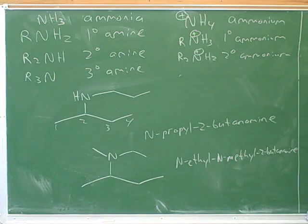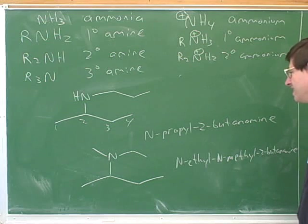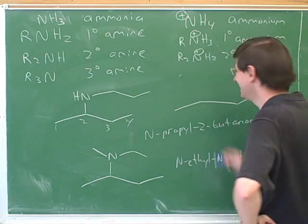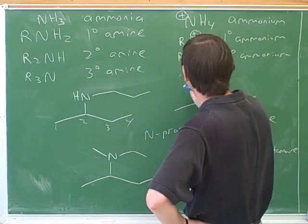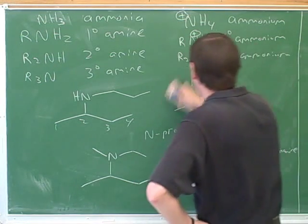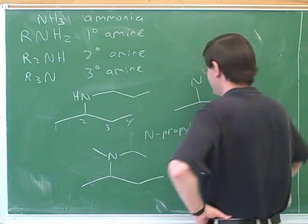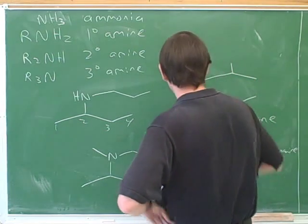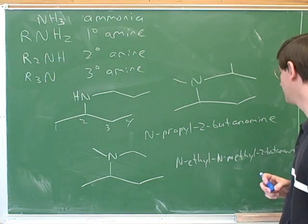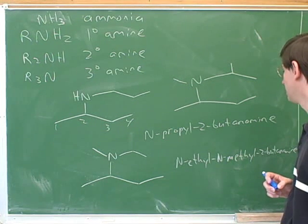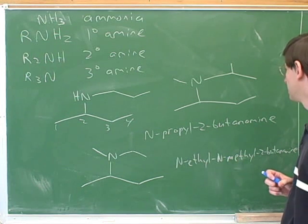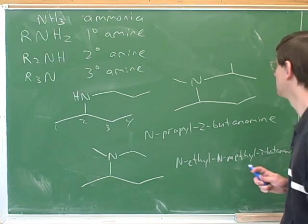So if there was a methyl group on the ethyl, then it would be N, and then in parentheses, (2-methylethyl), and then N-methyl. If there was an ethyl where it was just erased from, then it would be N-(1-methylethyl) — well, N-(methylethyl). Actually: N-(1-methylethyl) and methyl-2-butanamine.